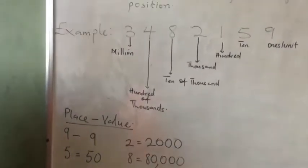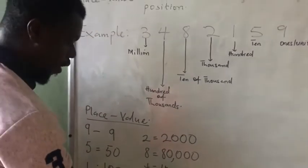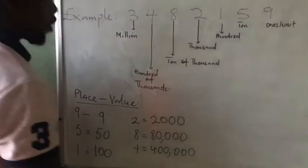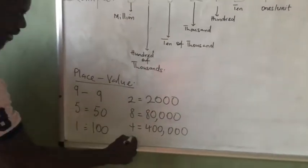Then you move on to the hundred of thousands, which is what? The 4. So you get what? 400,000. Because when you write the 4, all the rest of the digits will change to 0. And the last one is the 3.